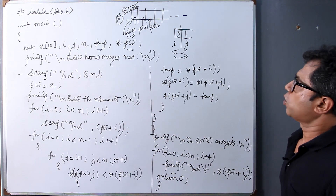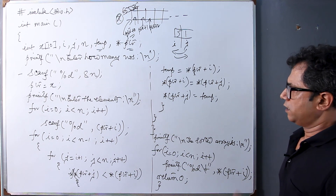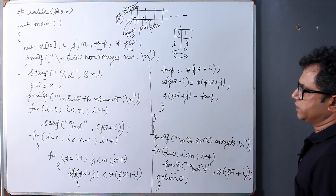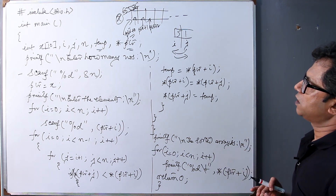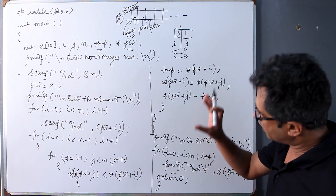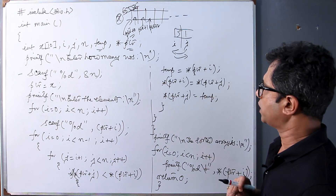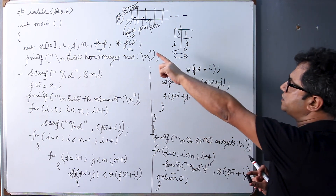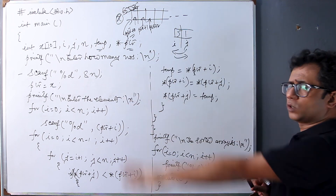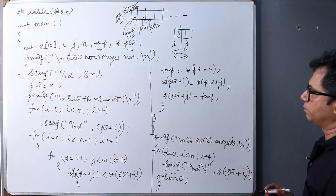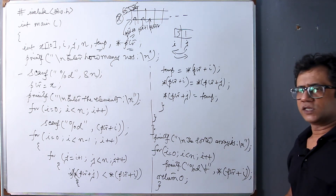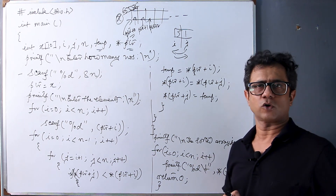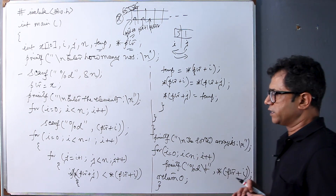This is the entire code for sorting an array using pointer arithmetic. A simple sorting technique has been employed here — the same one shown before without pointers, but this time we use pointer arithmetic throughout. If you have any queries or doubts about this program, please post them in the comment section below. Thanks for watching.